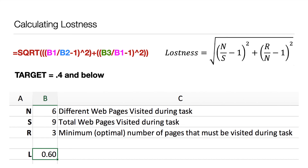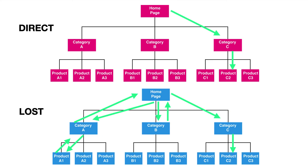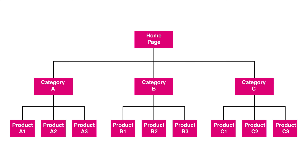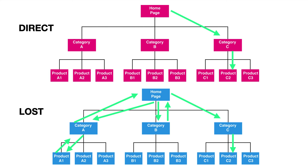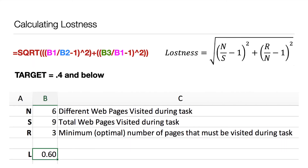That gives us a total lostness of 0.6. Lostness wants to have a score of 0.4 or lower. A score of 0.6 means people are getting lost. Looking back at the page, we can see it's gone from a simple website to getting very lost, even with such a tiny website. We need to improve the signs on the website, improve navigation, make buttons clearer, and make it easier for the user to navigate and not get lost.